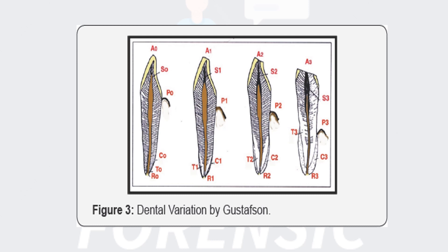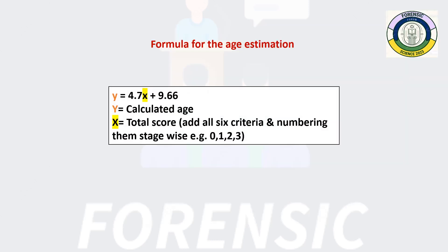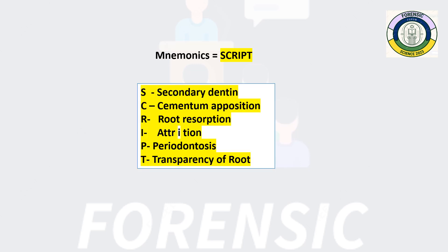This is the formula for age estimation. In this formula, X equals the total score of all six criteria after numbering them as 0, 1, 2, and 3. This is the mnemonic to remember all six criteria — that is SCRIPT.